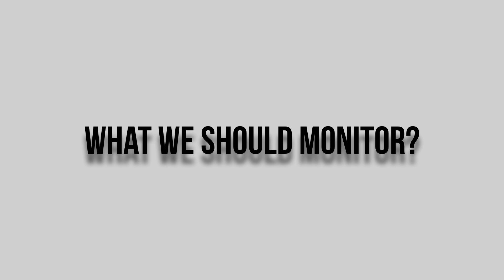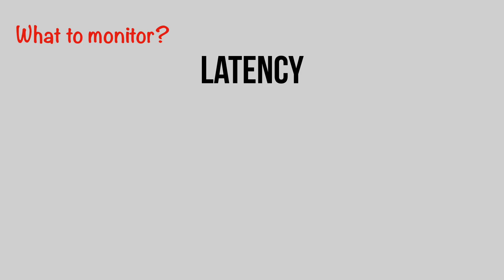The next question is: what should we monitor? In distributed systems there are four things we need to monitor according to the SRE book from Google — I'll leave the link in the description box — and those are latency, traffic, errors, and saturation. Latency is the time it takes to service a request, and it's important to distinguish the latency of successful requests from failed ones. Traffic is a measure of how much demand is being placed on your system — for a web service this is usually HTTP requests per second.